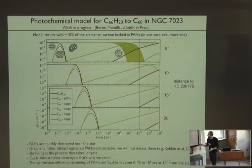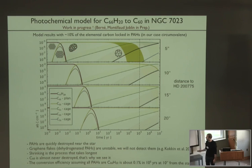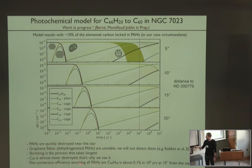Some conclusions about this part: PAHs are quickly destroyed near the star—they are fully dehydrogenated, and these dehydrogenated PAHs are unstable, so we will probably not detect them because they fold very quickly. The shrinking process—from the floppy cage to the symmetric C60—is what takes the longest time. The C60 is also almost never destroyed, and maybe that's why we see it in the interstellar medium. The conversion efficiency, assuming all PAHs are C66H20, is about 0.1% of these molecules converted into C60 in about 10^5 years.